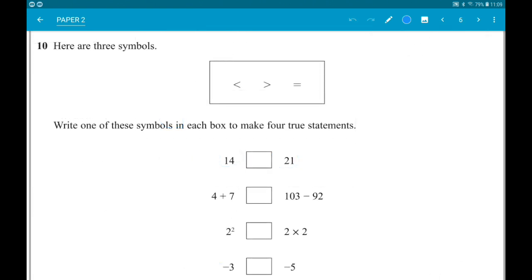Number 10: Here are three symbols. Write one symbol in each box to make four true statements. First up, fourteen box twenty-one. Fourteen is less than twenty-one, so we use the less than symbol. Next, four add seven box one hundred and three minus ninety-two. Both sides are eleven, so we want an equals sign.